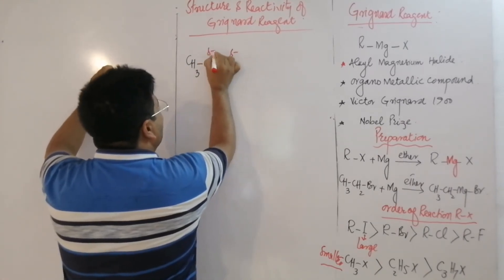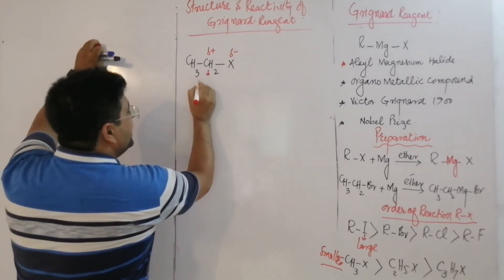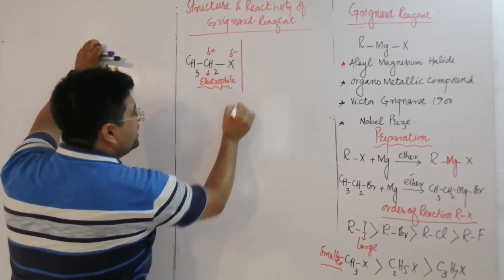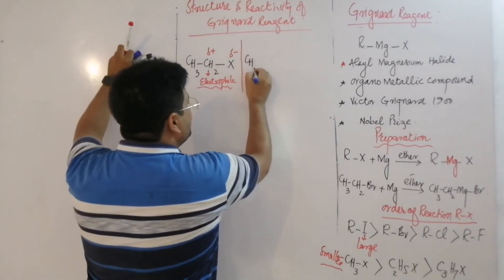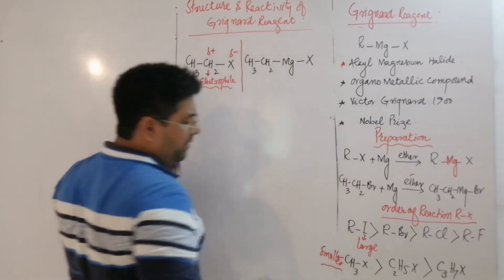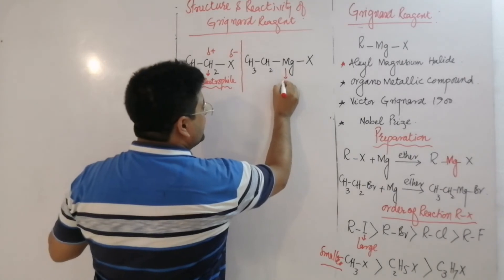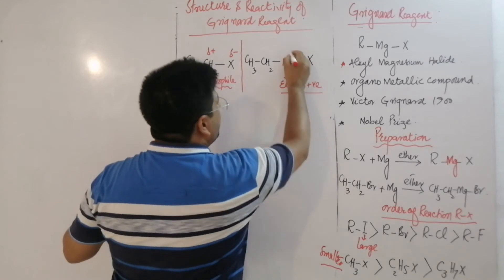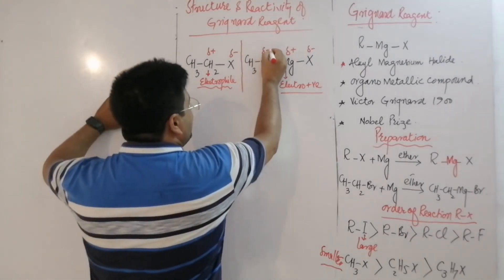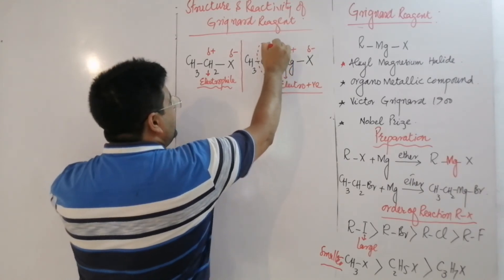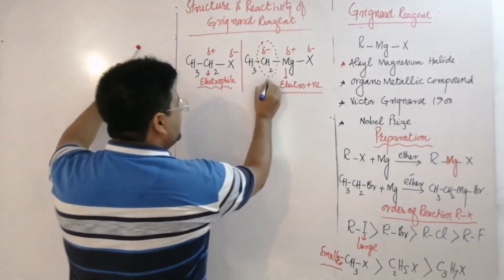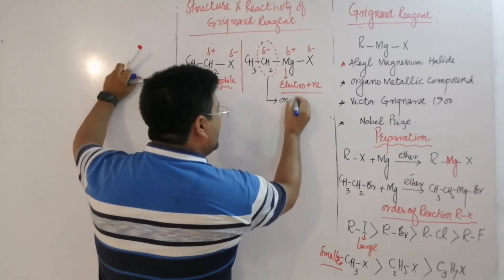In alkyl halide, the halogen group carries a partial negative charge, and the alpha carbon is an electrophile. In contrast, in Grignard Reagent, magnesium metal is attached, and since magnesium is more electropositive, it takes on a partial positive charge. This makes the carbon carry a partial negative charge, converting it from an electrophile to a nucleophile. Being a nucleophile, it can easily attack electrophiles and positive species.